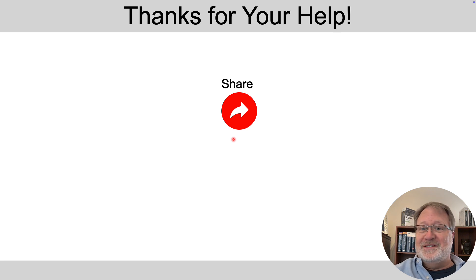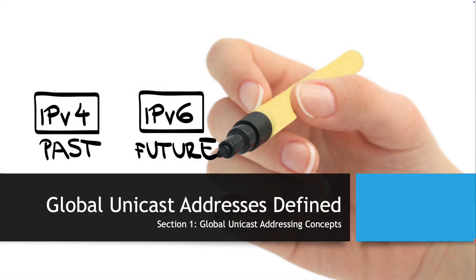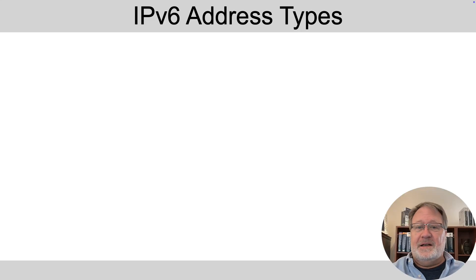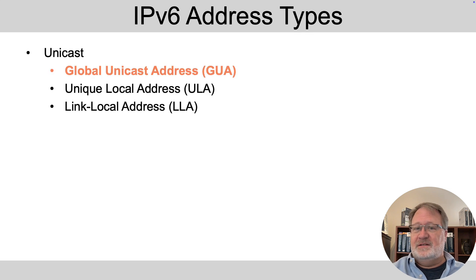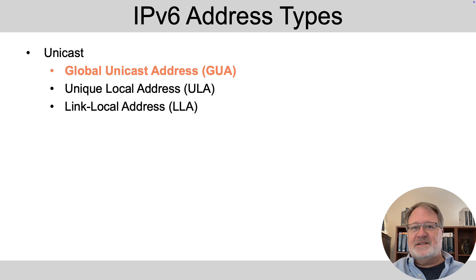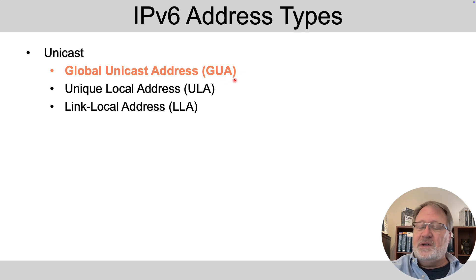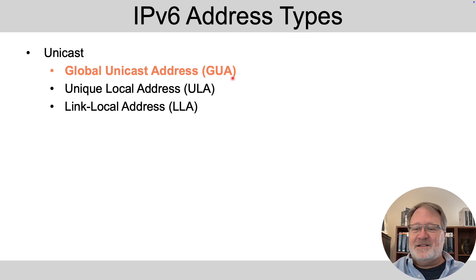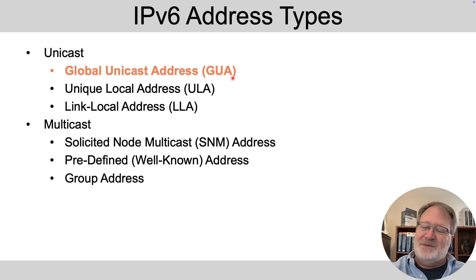Let's talk about GUAs — global unicast addresses. To set the context, GUAs are just one type of unicast address. There are also unique local addresses (ULAs) — think of GUAs as public addresses compared to IPv4, and ULAs as private addresses. There are also link local addresses and multicast addresses, but our goal in this video is to focus solely on GUAs.